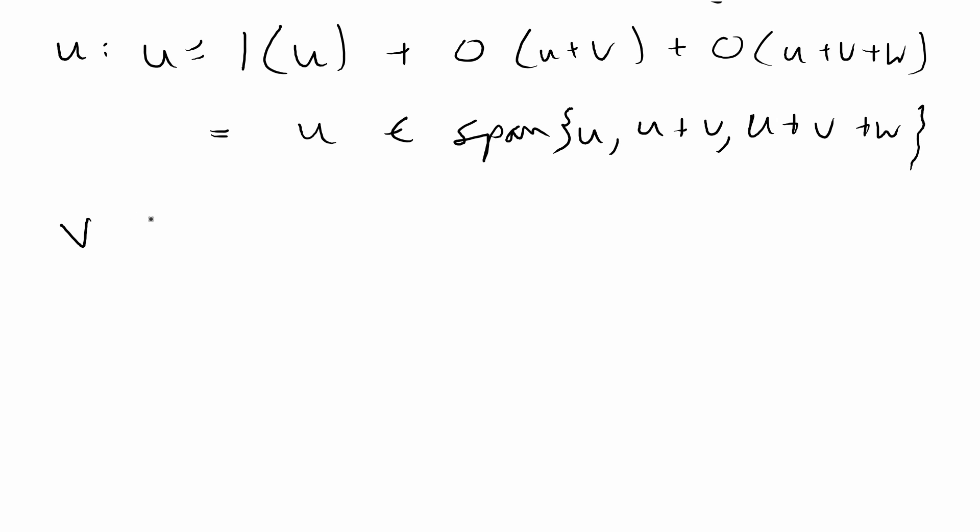Similarly for v, we have v is equal to... so the first thing we're going to have to do is get u plus v and then make x2 equal to 1, so we have u plus v. That would mean we're going to put negative 1 for u, so we have u plus v minus u plus 0 times u plus v plus w.